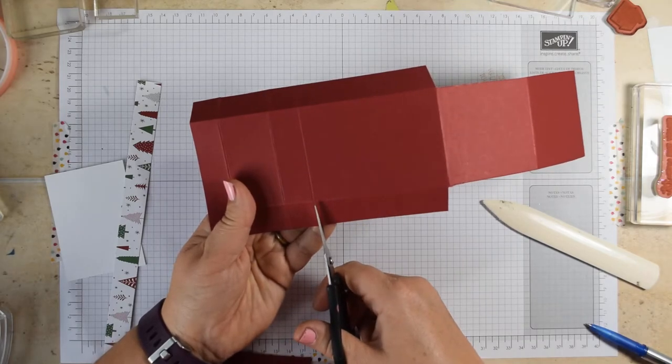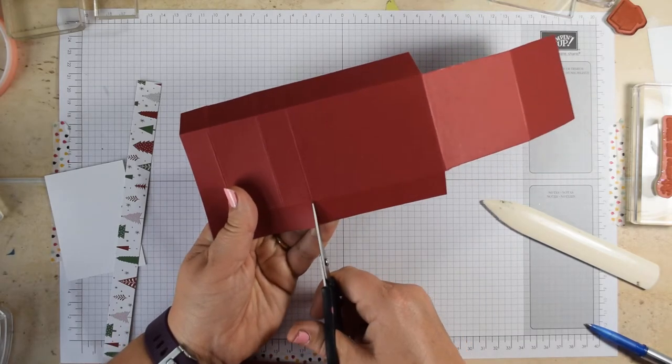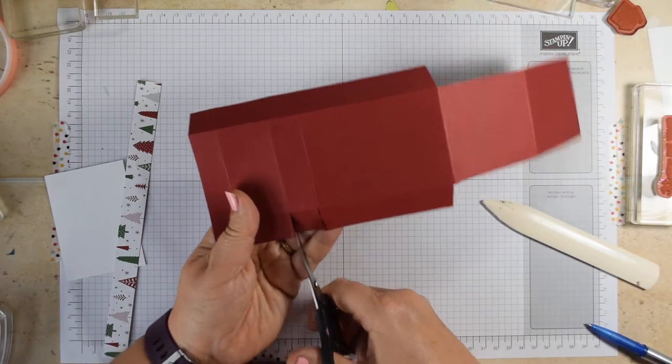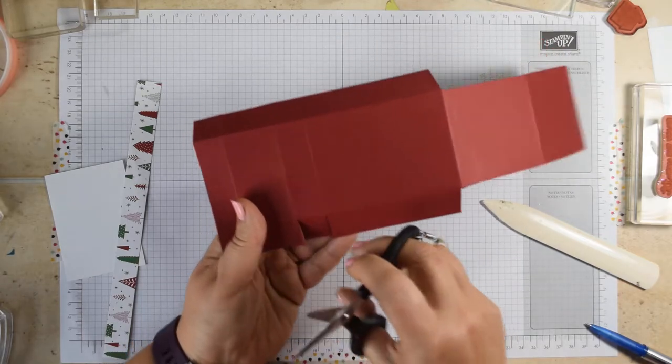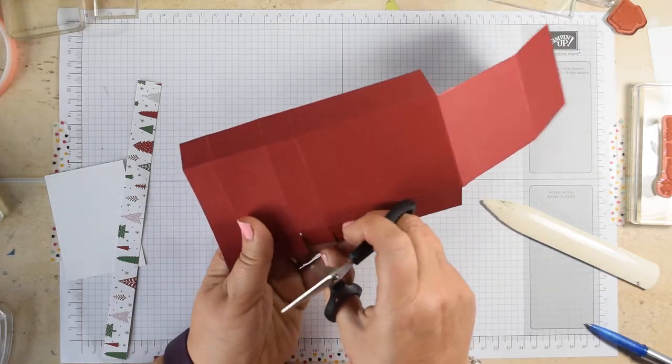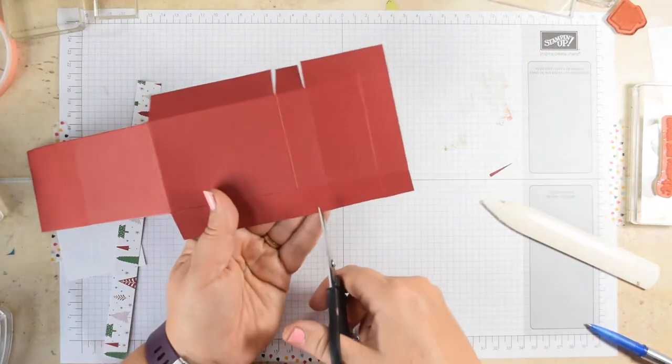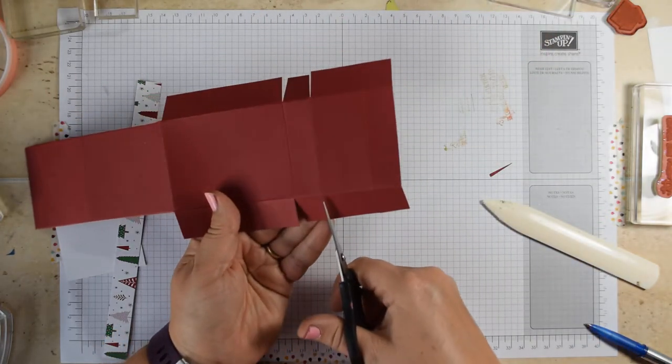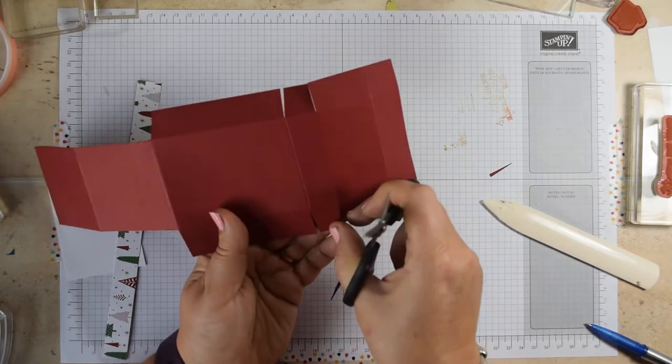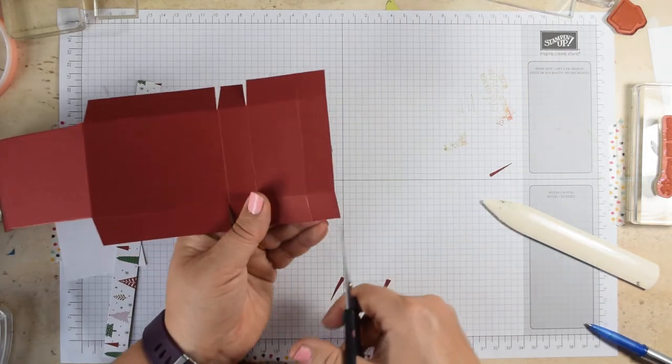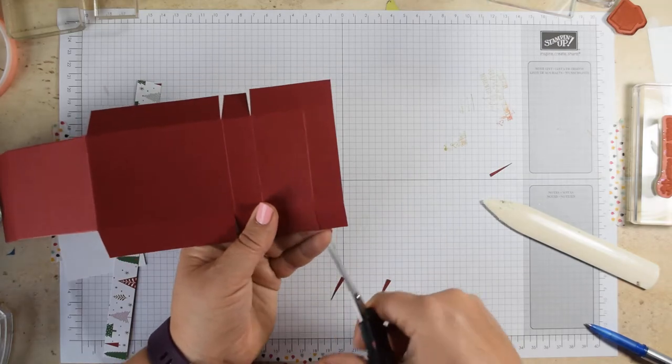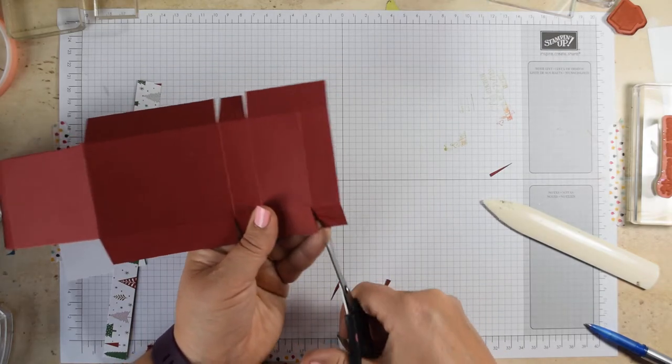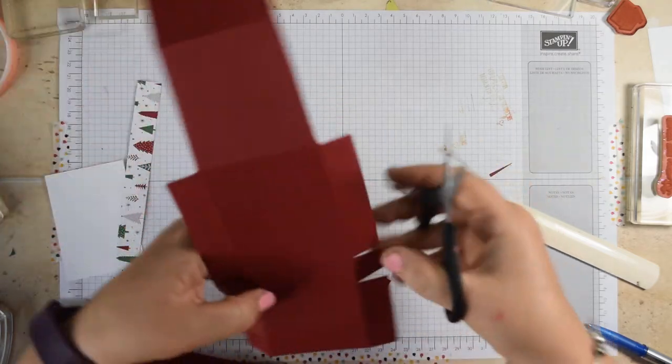Then you're going to snip on where it should just be a short score line. So if you do it like me and you accidentally go all the way, it really doesn't matter. It's not going to adversely affect your final project. So you're going to notch out that first little tab, keep the sides straight on this long one, and notch out the other small one.